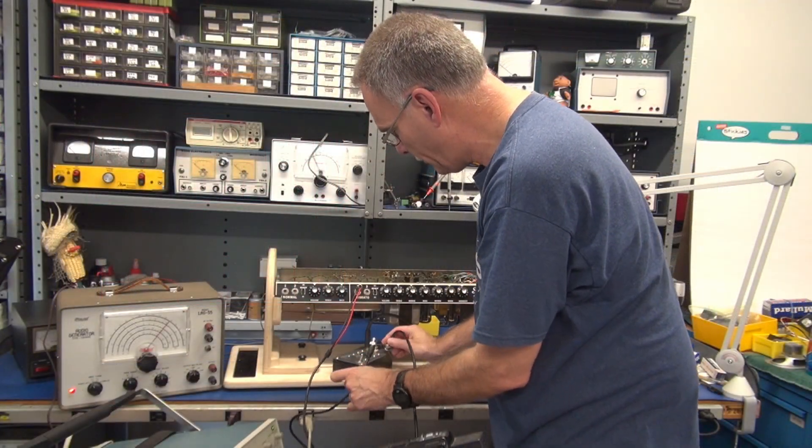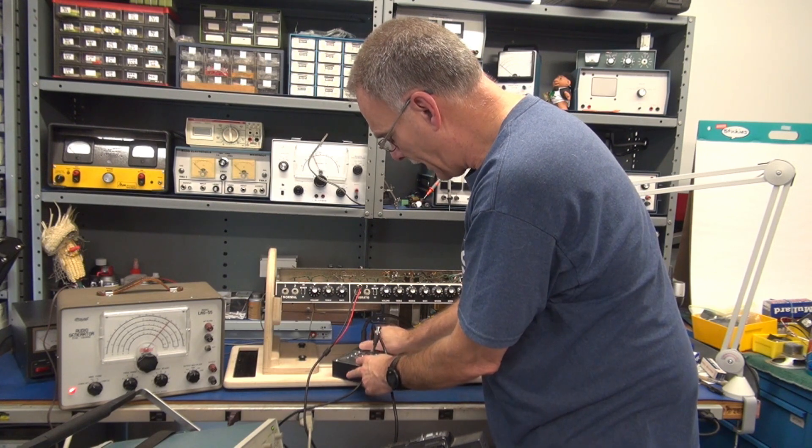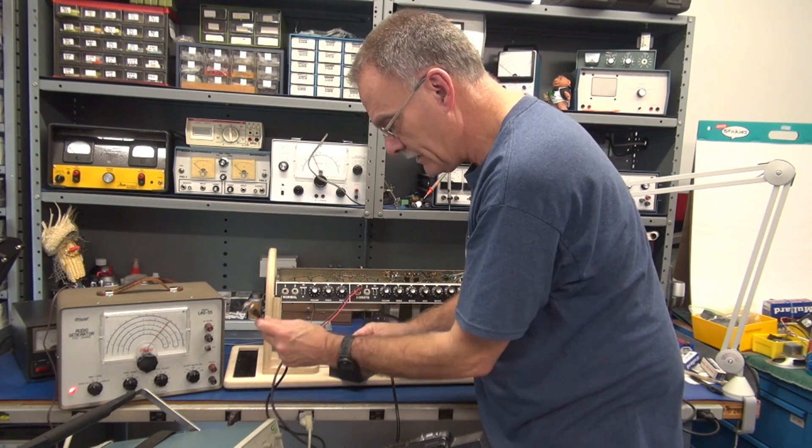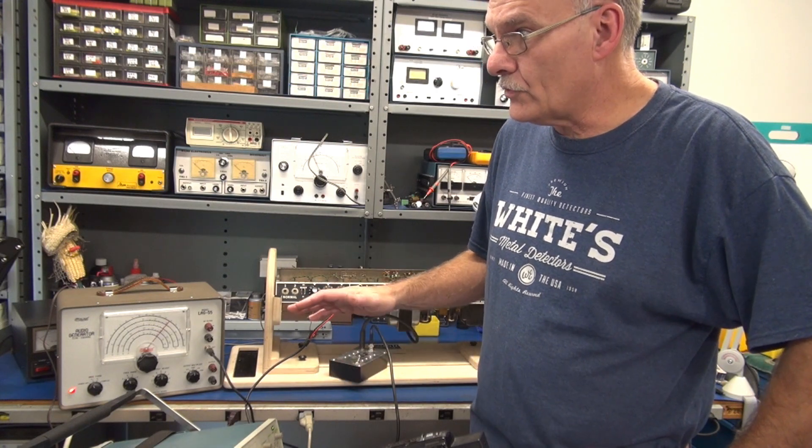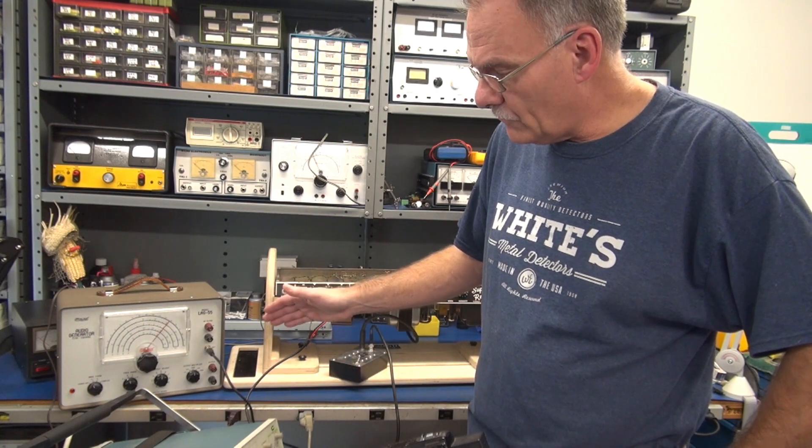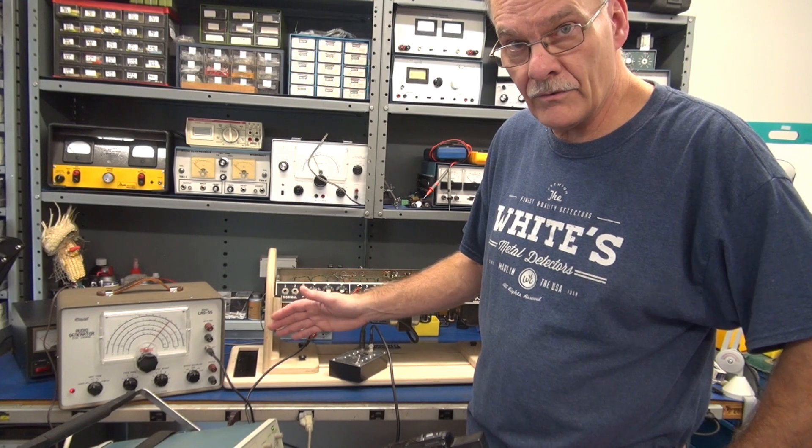All right, now I'm going to take the scope and I'm going to connect it back to the dummy load. So I'm reconnected the way I was originally. The audio generator now is providing one kilohertz output at 150 millivolts, which we verified on the scope.